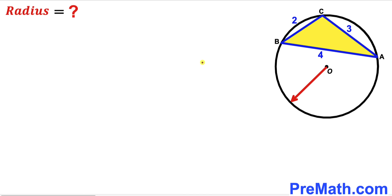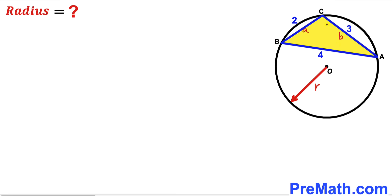Let's go ahead and get started. I'm going to label the radius of this circle as lowercase r. Now let's focus on this yellow shaded triangle ABC and its vertices A, B, and C. The side opposite to vertex A I'm going to label as lowercase a, the side opposite to vertex B as lowercase b, and the side opposite to vertex C as lowercase c.